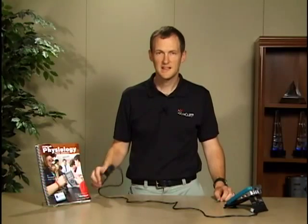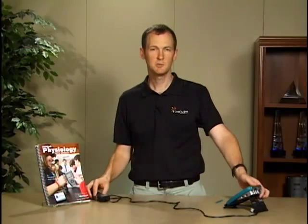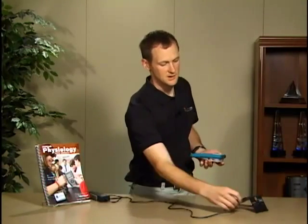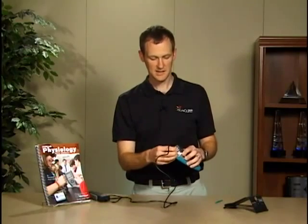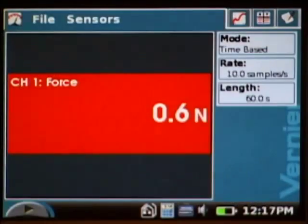This is experiment 16 from Human Physiology with Vernier. This uses the hand dynamometer sensor, and we're going to do it with the LabQuest. Once I connect the sensor into the LabQuest, the software automatically identifies that the hand dynamometer is connected and gives me a live readout of the force reading.